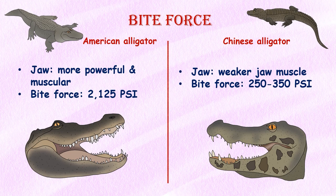Bite force. The jaws of the Chinese alligator are less powerful than those of the American alligator, which is more powerful and muscular. The American alligator's bite force has been measured at around 2,125 PSI. In contrast, the Chinese alligator has a weaker bite force; while their exact bite force has not been measured, it is estimated to be around 250–350 PSI.